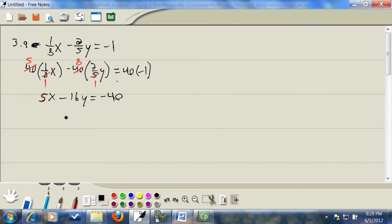Third step, get everything with the variable you're solving for on one side, everything else on the other side. I'm solving for y, so I'm going to take this negative 16y and move it to the right side. And I'll take this negative forty and move it to the left side. Now remember when you take anything across equals, the sign changes. So the negative forty becomes a positive forty. The negative 16y becomes a positive 16y.